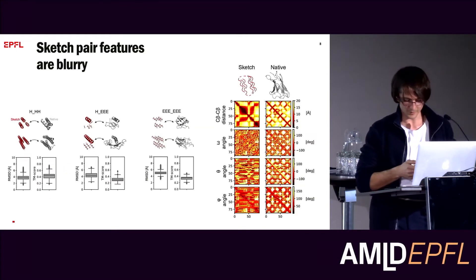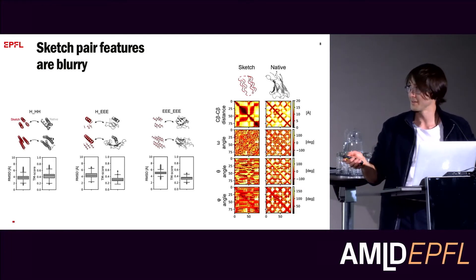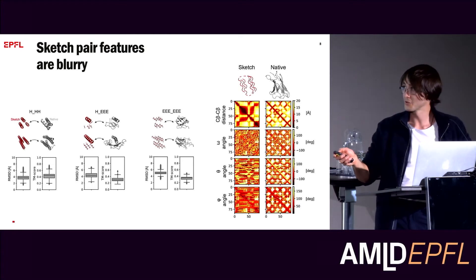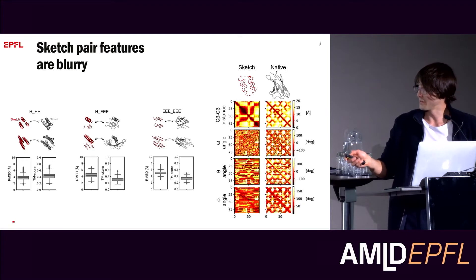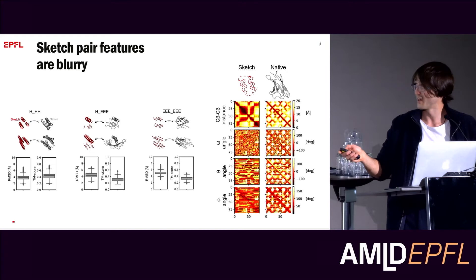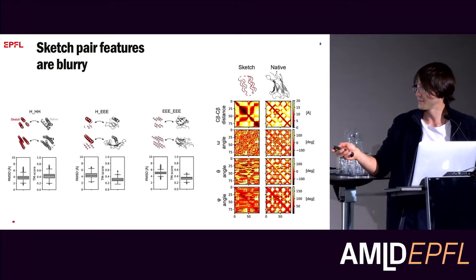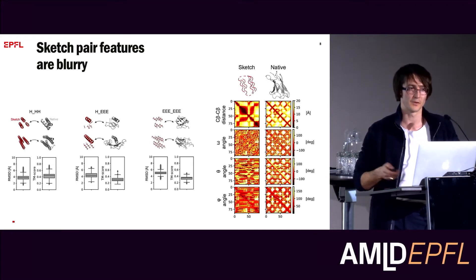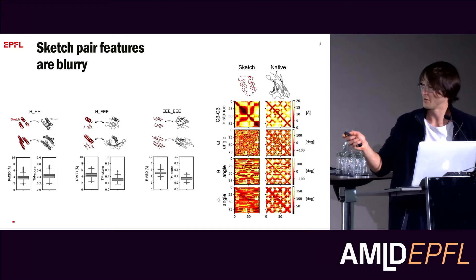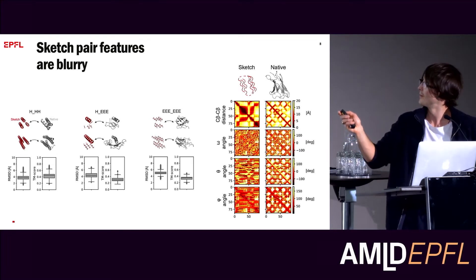We generated a large dataset of about 40,000 sketch-to-protein-structure pairs. Here I'm showing three examples. If you superimpose the sketch onto the natural protein structure, you can see by TM score — where one would be perfect superposition and zero very different — that most of them are at 0.3, meaning only around 30% of the sketch well aligns to its native counterpart. We also see this difference at the feature level, where the sketch is very blurry while the native structure has much more detail.